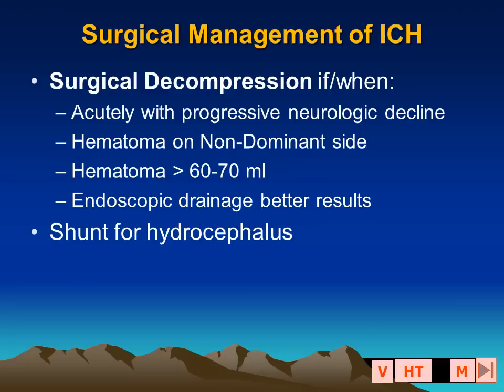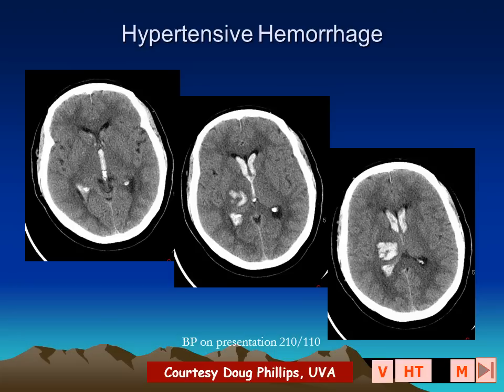Surgical management of intracerebral hemorrhage remains somewhat controversial. It may be indicated in a patient with an acute presentation and progressive neurologic decline. When the hematoma is on the non-dominant side, surgery may be more favorable. If the hematoma volume is larger than 60 to 70 milliliters, an endoscopic drainage may be the best operative approach.